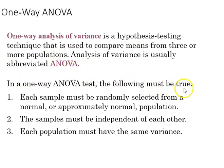In a one-way ANOVA, the following must be true. Each sample is randomly selected from a normal or approximately normal population. The samples must be independent of each other, and each population must have the same variance.